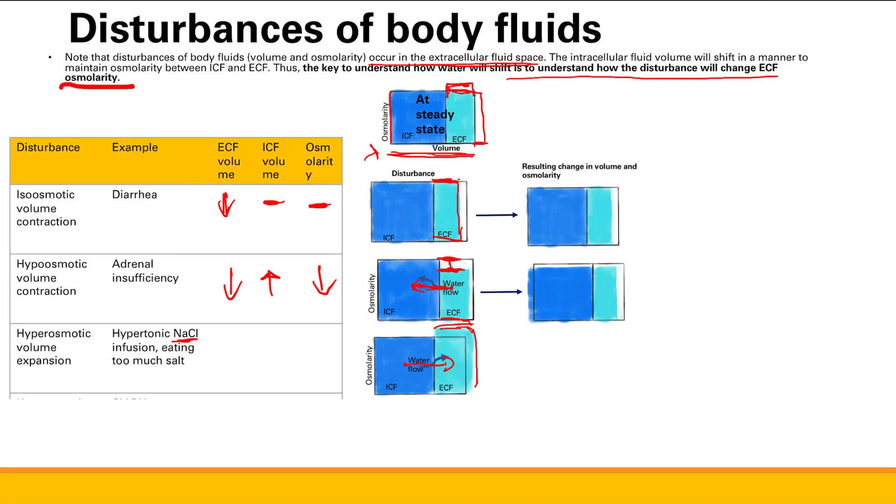So what's going to happen to our ECF volume? We already have volume expansion, we're going to get even more. So we're going to have increased ECF volume. And ICF, we lose water, so ICF volume goes down. What happens to our overall osmolarity? It's already increased. Your osmolarity is always based on the insult, but then it's balanced out a little bit, so it's not as severe. And so now we have increased osmolarity.